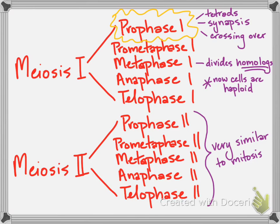And then when we get into meiosis II, you're going to see that it's very, very similar to mitosis, except that the cells are now haploid instead of diploid.